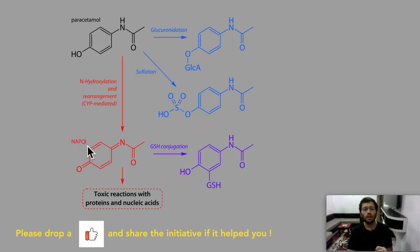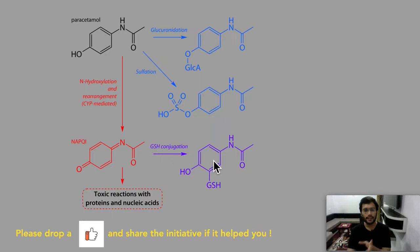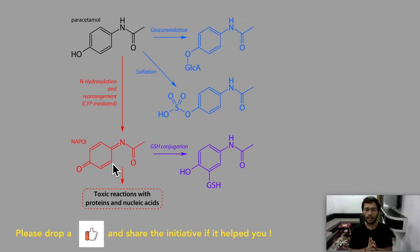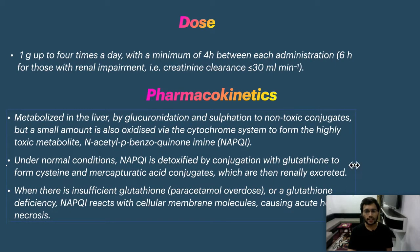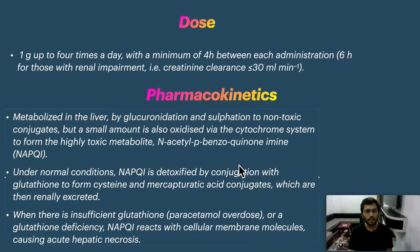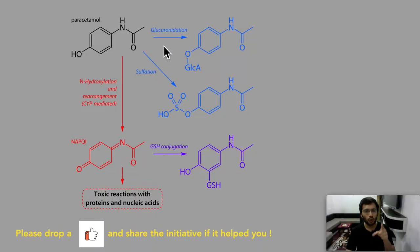NAPQI is normally conjugated with glutathione and excreted. However, if glutathione is deficient or if there is overactivation of the CYP pathway, NAPQI accumulates. It then reacts with liver and kidney cells, generates free radicals, and ultimately causes toxicity. Compounds from glucuronidation and sulfation are non-toxic and easily excreted.